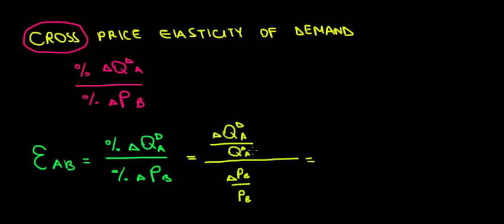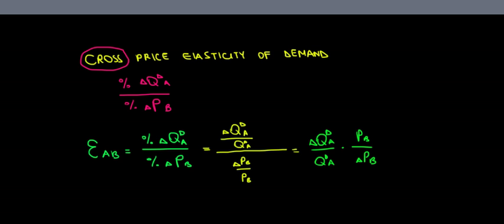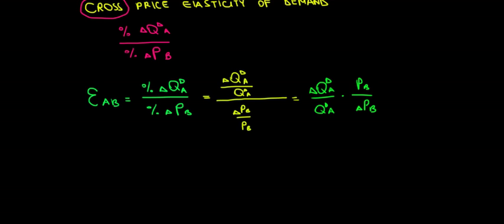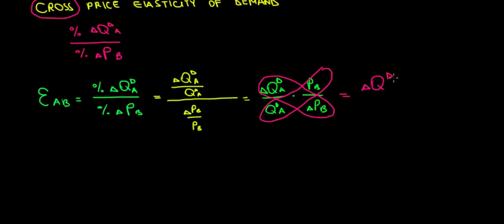Let's do some math here to group the deltas together. That's going to be the change in quantity demanded of good A divided by the quantity demanded of good A, times the price of good B divided by the change in price of good B — because we just multiply by the inverse. So we group the deltas together: the change in quantity demanded of good A divided by the change in price of good B, times the price of good B divided by the quantity demanded of good A.